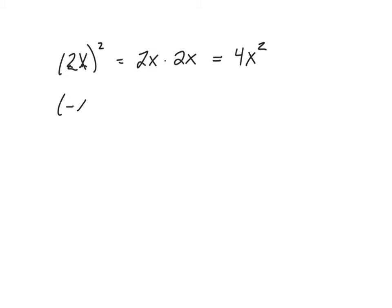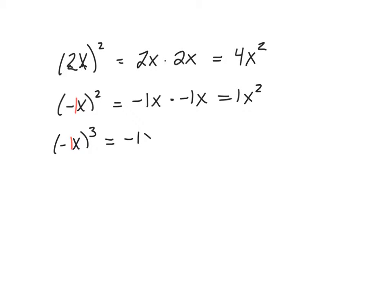What if I made this negative x squared? Well, negative x is the same thing as negative 1x. So that would mean negative 1x times negative 1x. We multiply the coefficients: negative 1 and negative 1 gives a positive 1, and x times x gives x squared. What would happen if I multiplied negative x to the third? That's the same as negative 1 raised to the third power, so I need negative 1x times negative 1x times negative 1x. Negative 1 times negative 1 gives positive 1x squared, and then multiplying by negative 1x gives negative 1, and we get negative x to the third.